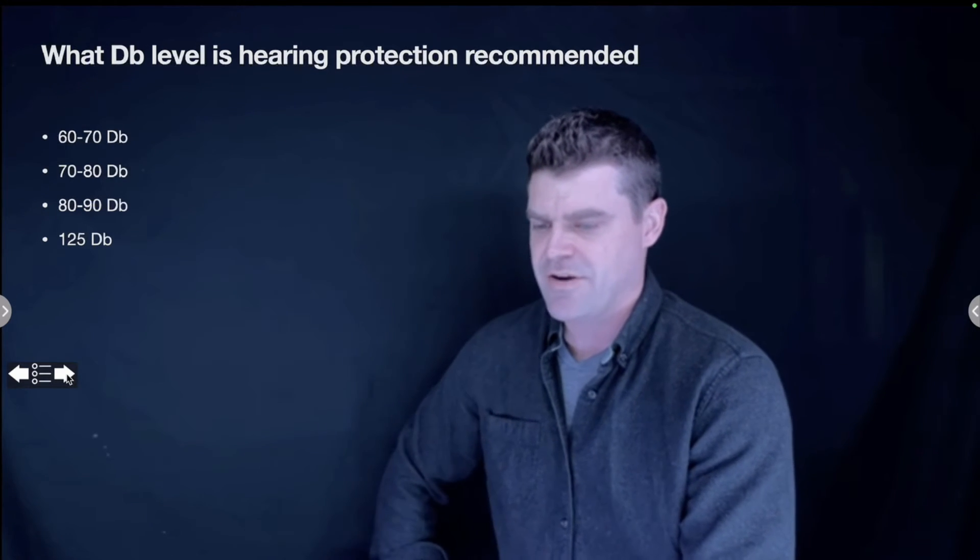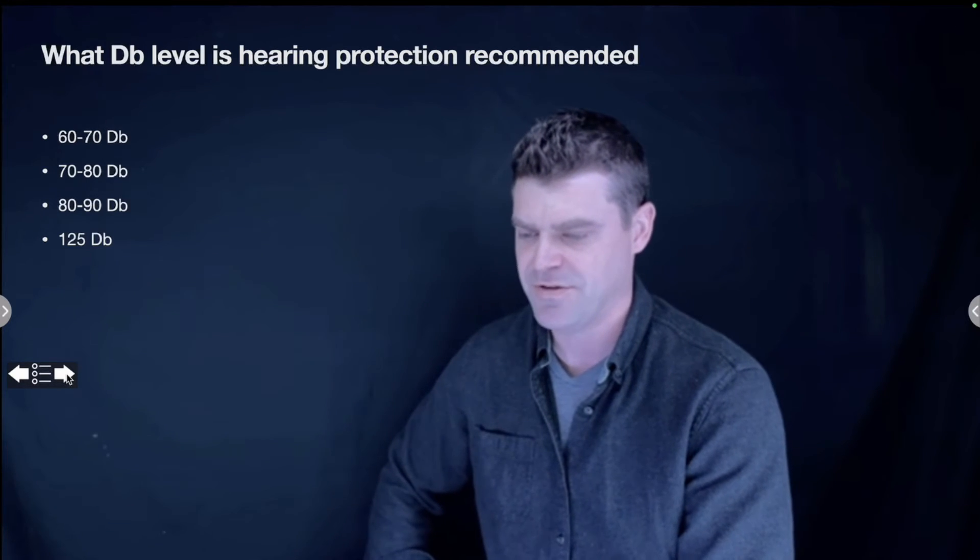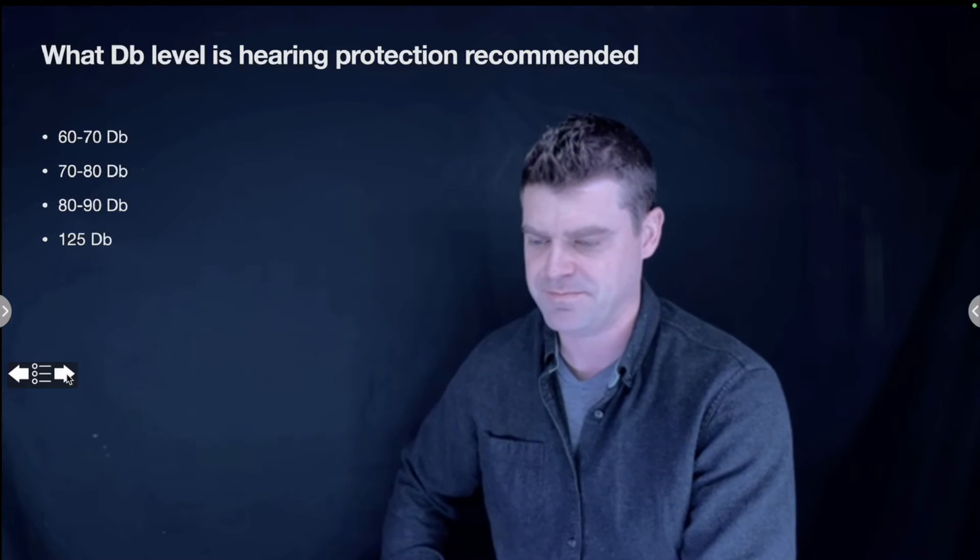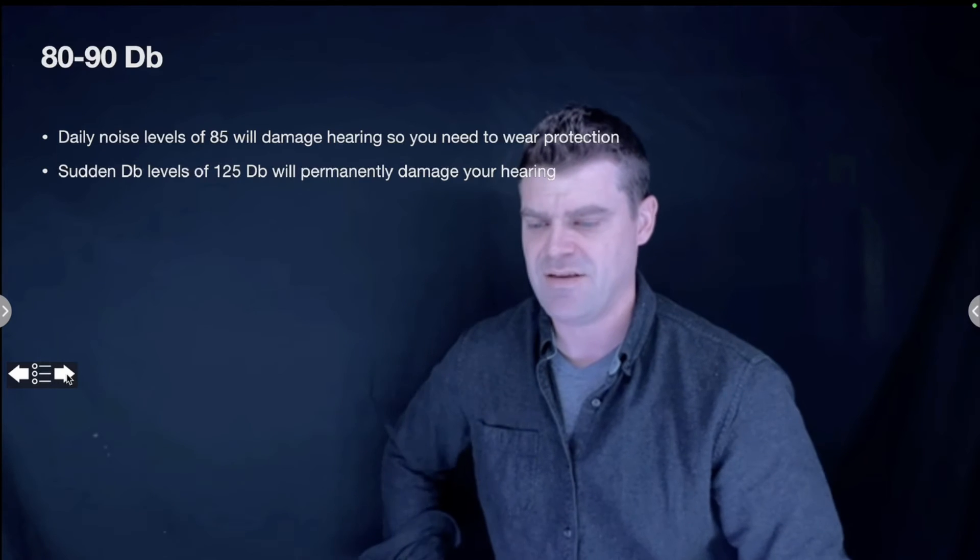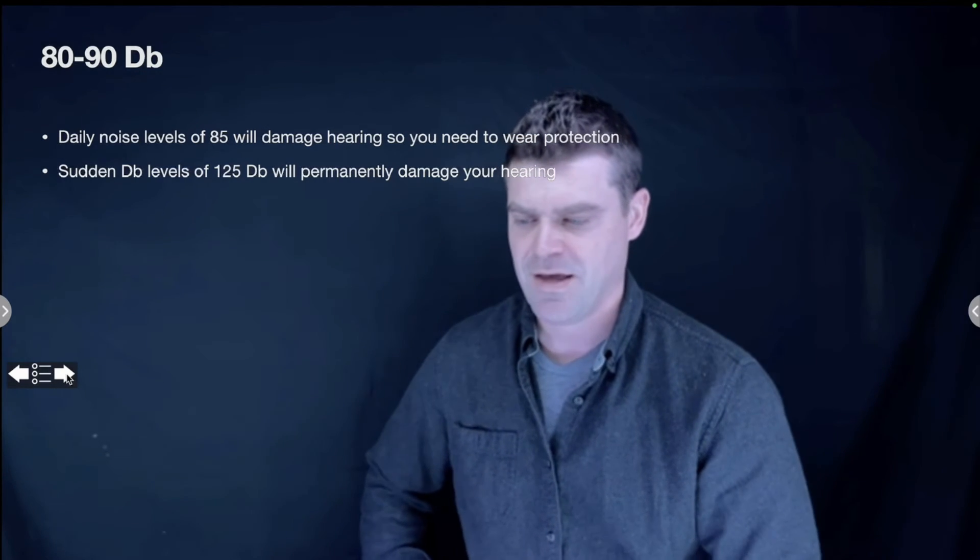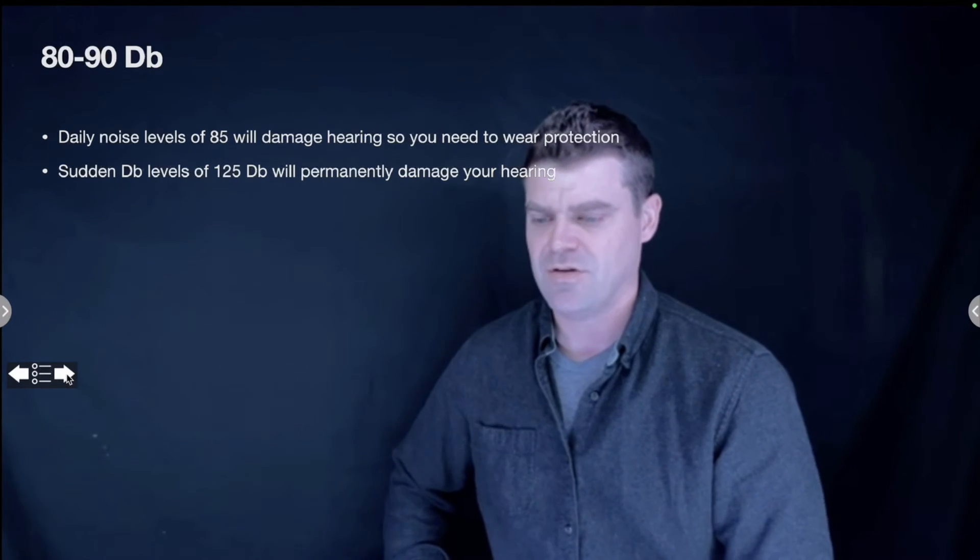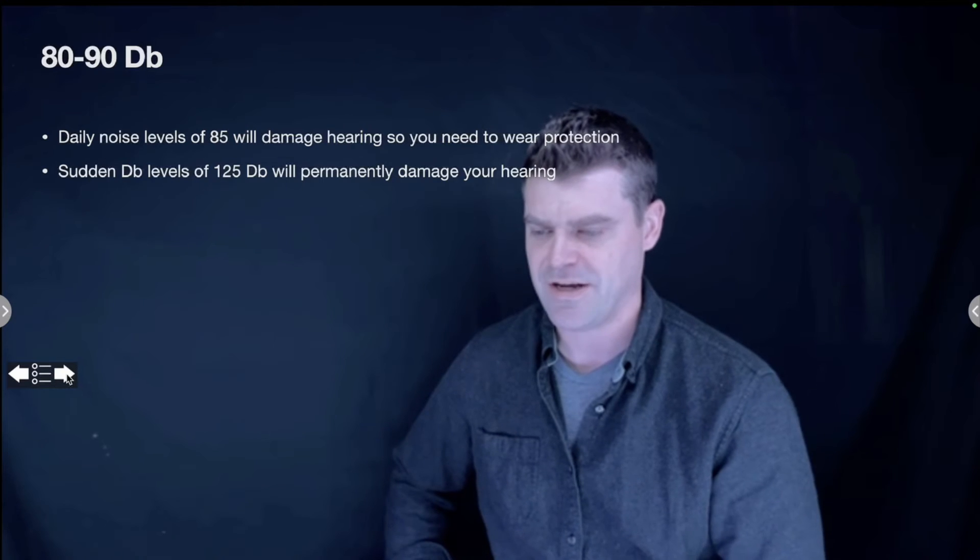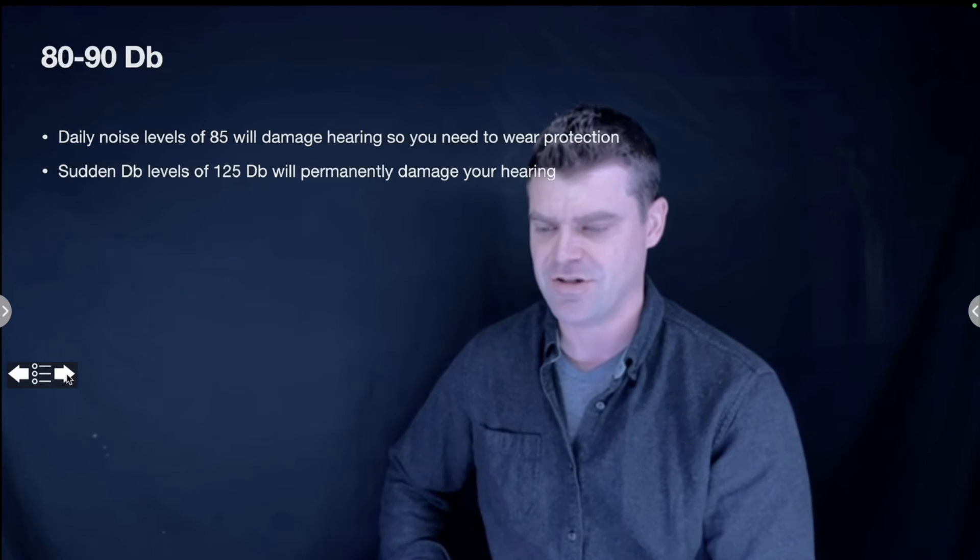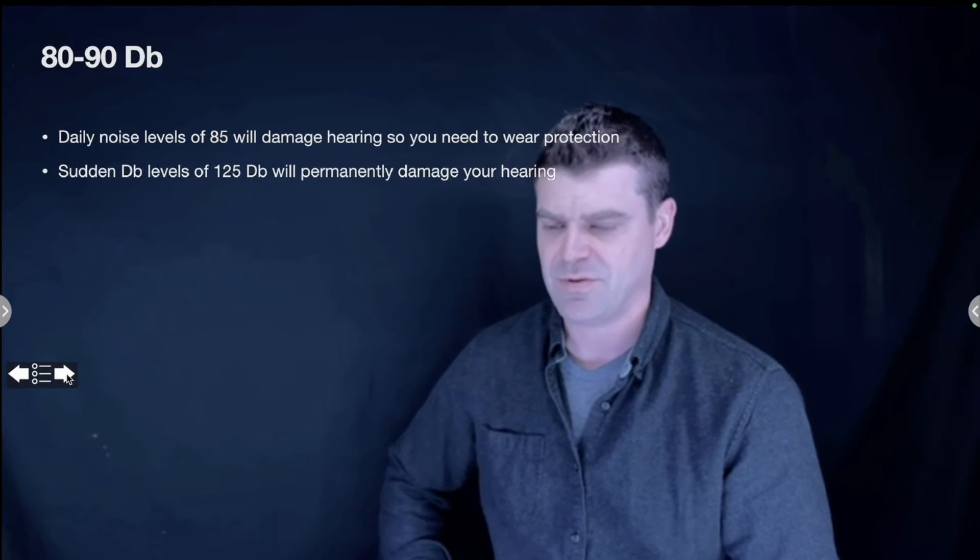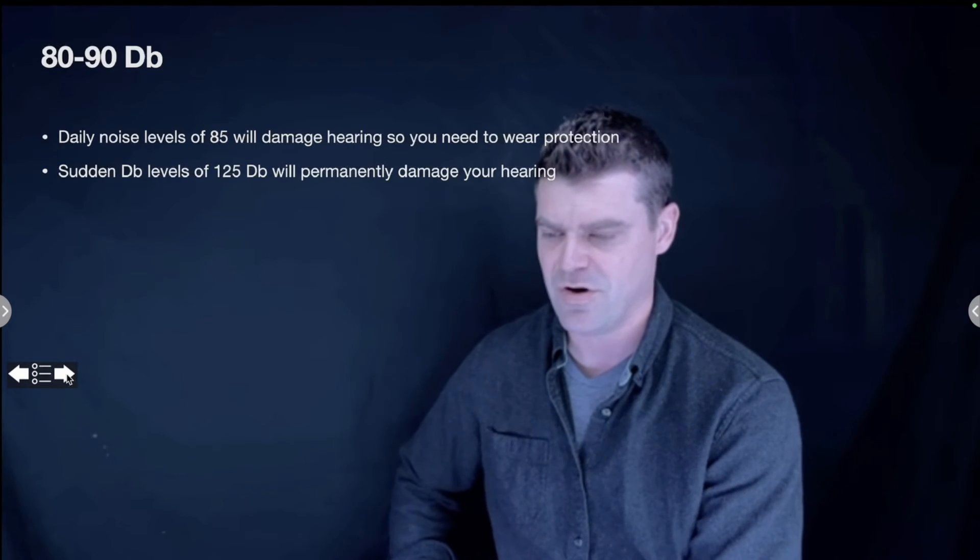What decibel level is hearing protection recommended? 60 to 70 decibels, 70 to 80 decibels, 80 to 90 decibels, or 125 decibels? Daily noise levels of 85 decibels will damage hearing, so you need to wear hearing protection. If you're in an environment where you have that constant noise of 85 decibels, over time you're going to start losing your hearing. If you're in a situation where it's quiet but there's a potential for large bangs or large noises up and above 125 decibels, you would be damaging your hearing, so you need to wear hearing protection just in case at all times.